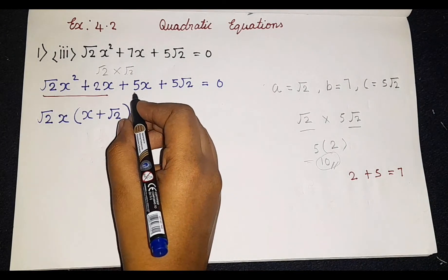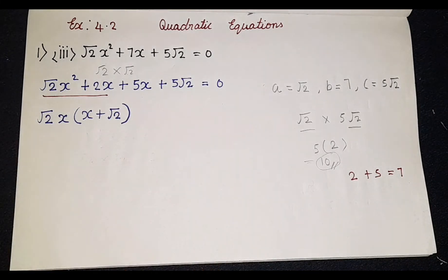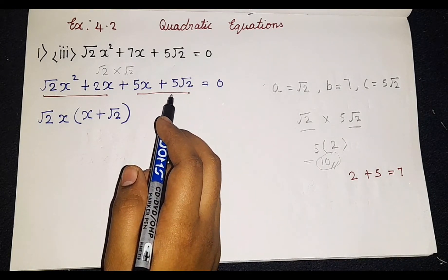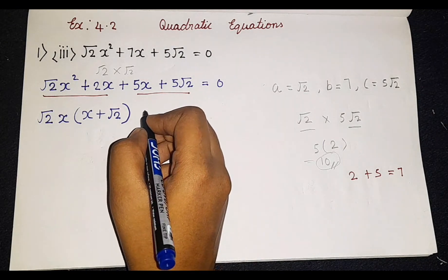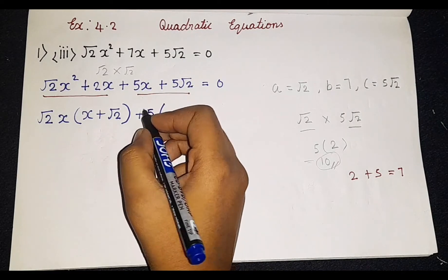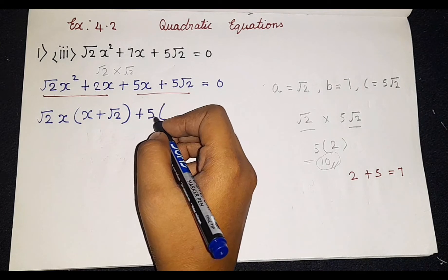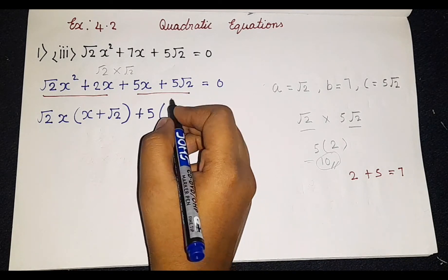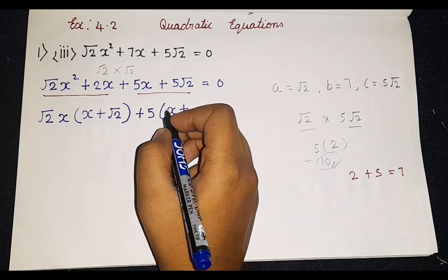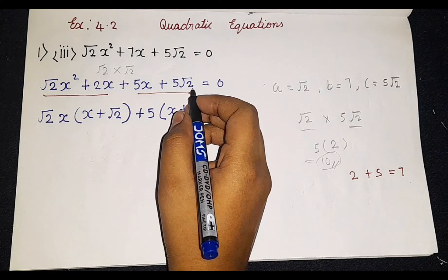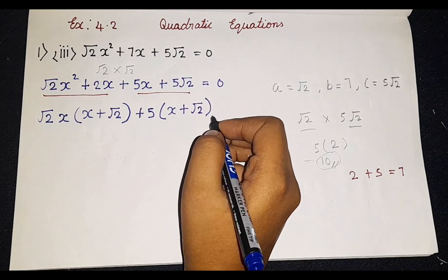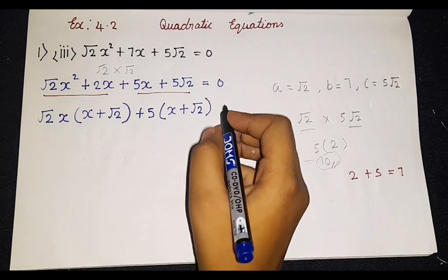For the second group — 5x plus 5 root 2 — we have 5 the most, so we are going to take plus 5 as common. So 5 into x is 5x, and 5 into root 2 is 5 root 2. So the second group becomes plus 5 times the bracket (x plus root 2), is equal to 0.